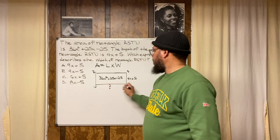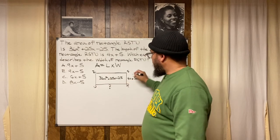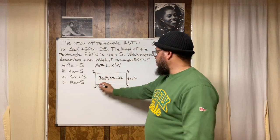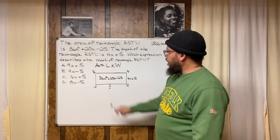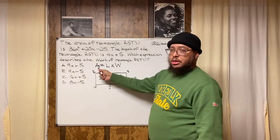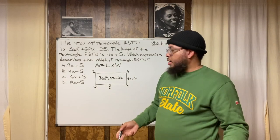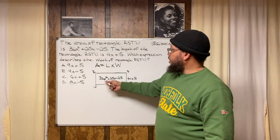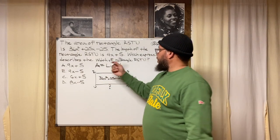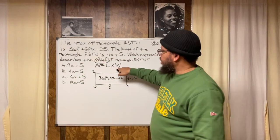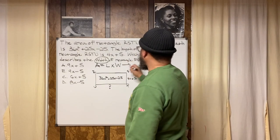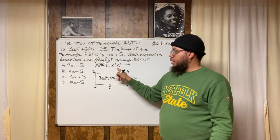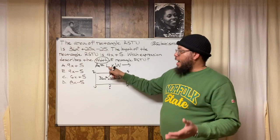I don't know the dimension from here to here. I know the length is 4x + 5, but I need to find the width. I can figure it out using the area formula. I'm not looking for the area — I'm looking for the width. So I need a formula that isolates W by itself. I'll do the opposite of multiplication, which is division — divide both sides by L.